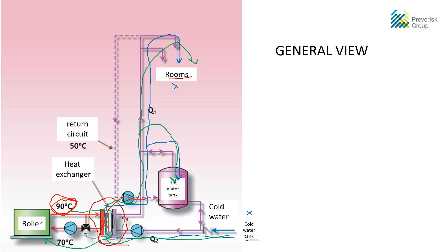Note that water from the boilers and water from the water tanks are not the same and never meet or get in contact. The water from the boilers is used only to heat the water from the cold water tank in order to increase its temperature above 50 degrees to be used in rooms. In summary, you have a heat exchanger, a boiler, and a water tank.